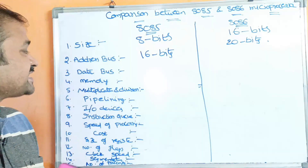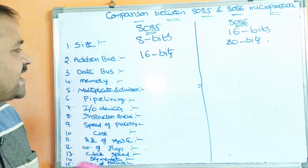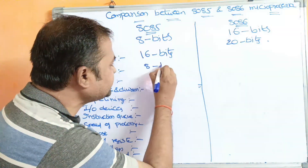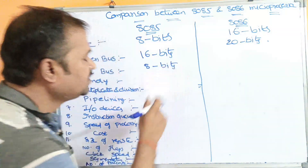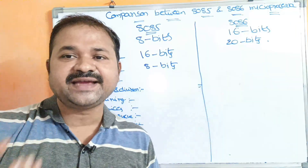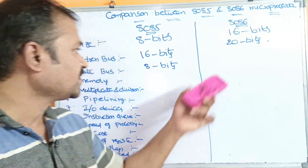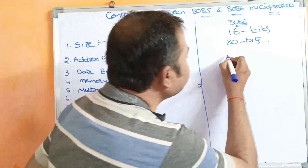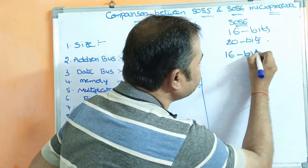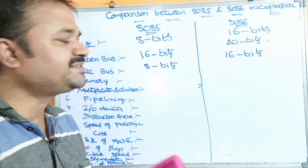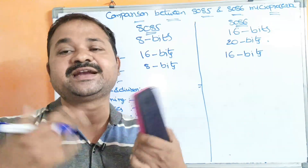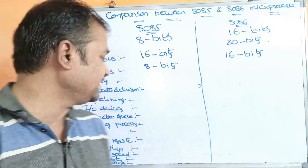The next characteristic is the data bus. The size of the data bus in the 8085 microprocessor is 8 bits, so it uses 8-bit data lines. Whereas the size of the data bus in the 8086 microprocessor is 16 bits, meaning it uses 16-bit data lines.